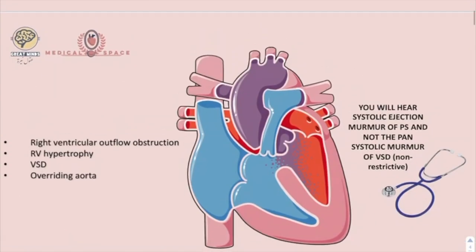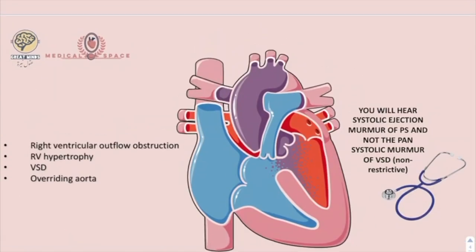Tetralogy of Fallot means there are four anomalies. The first one is right ventricular outflow obstruction, the second is right ventricular hypertrophy, then ventricular septal defect, and then an overriding aorta.